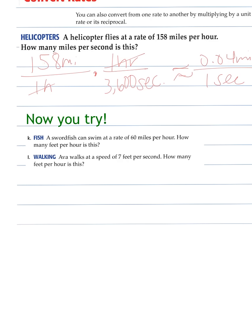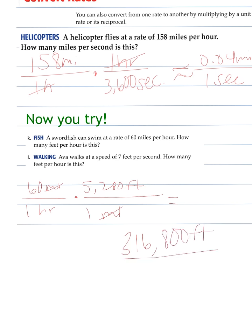Let's try this, here's some for you to try. We'll try the fish one. A swordfish can swim at a rate of 60 miles per hour. How many feet per hour is this? Well, we'll set up our 60 miles over one hour. And we want to get this into feet. So there are 5,280 feet per one mile. Again, my miles are diagonal from each other, so that cancels. Now, we multiply this, and we take 60 times 5,280, and we get 316,800 feet per one hour. So that's how we can change the rates in a unit rate.